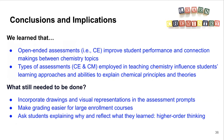What we learned from this study: open and deep assessments improve student performance and help students make connections across chemistry topics. Different types of assessments definitely influence students' learning approaches and their ability to explain chemical principles and theories. What still can be done: we hope to incorporate drawing and visualization into assessment prompts so students have opportunities to connect across representations. We also hope to make grading easier — especially for large enrollment courses with 200 students — and to ask students to explain their reasoning more, promoting higher-order thinking rather than just multiple choice.